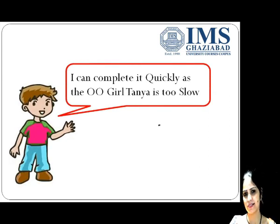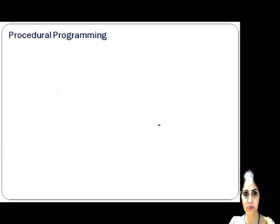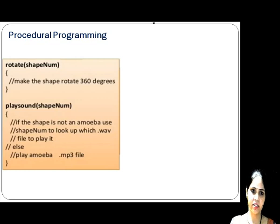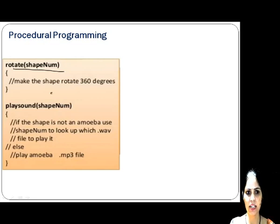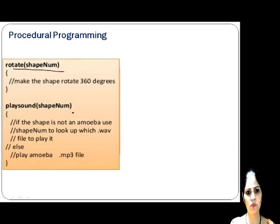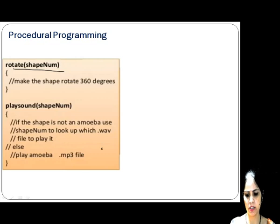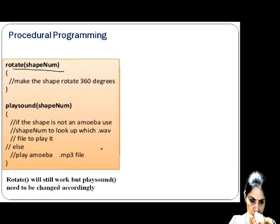Samir said he could complete it quickly as Tanya was too slow. Since the amoeba had to rotate 360 degrees, he kept the rotate function as it is and changed the play sound function. The change was: if the shape is not amoeba, the .wav file should be played; if it is amoeba, then the .mp3 file should be played.